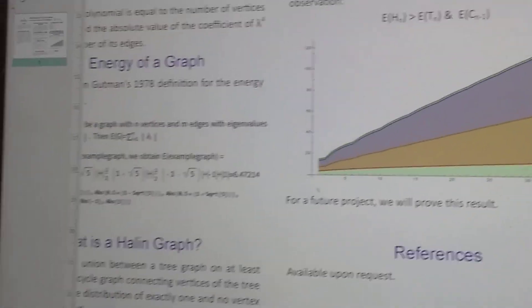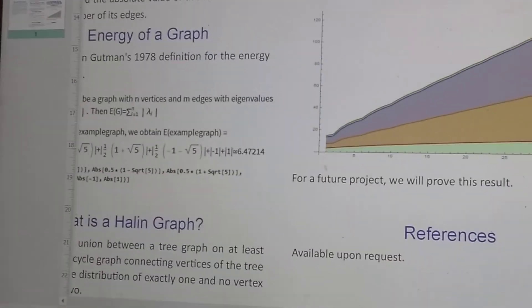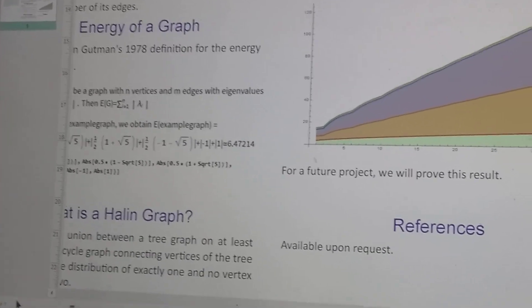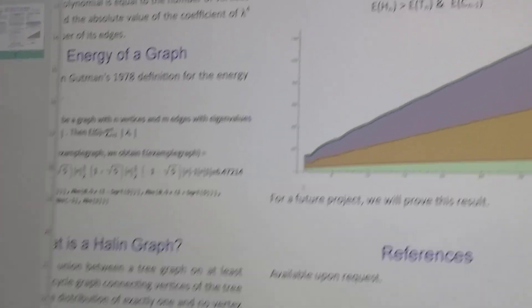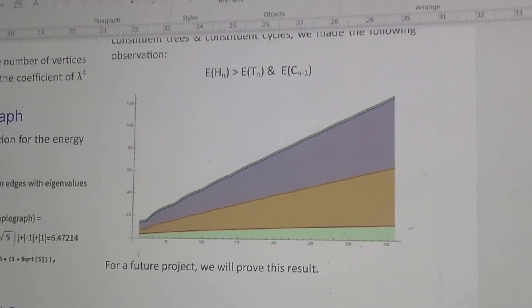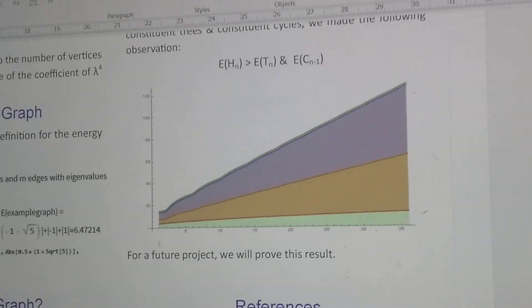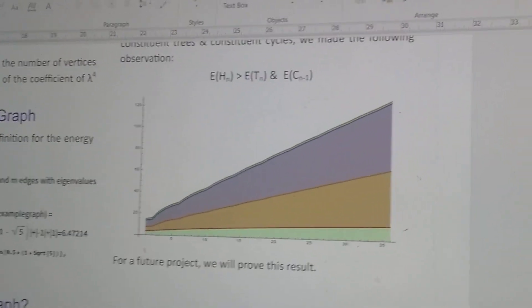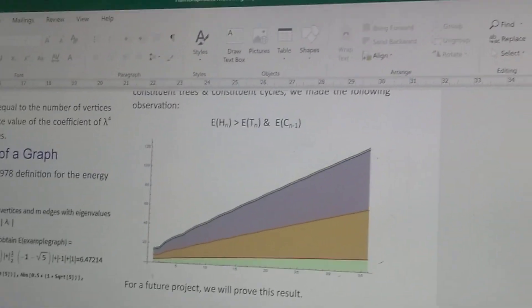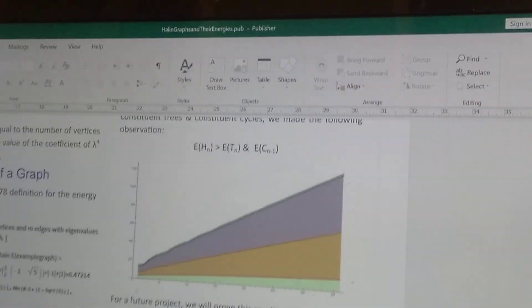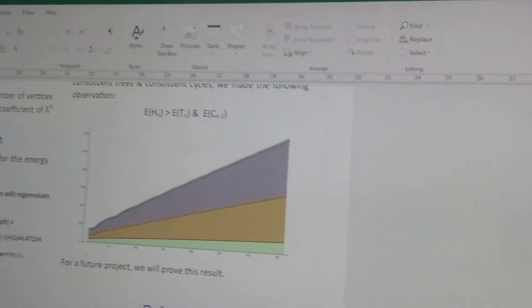So that was how the energy increased as the number of vertices increased. It is roughly linear. Maybe graph energy experts will leave comments. Alright, that's it. Thanks.